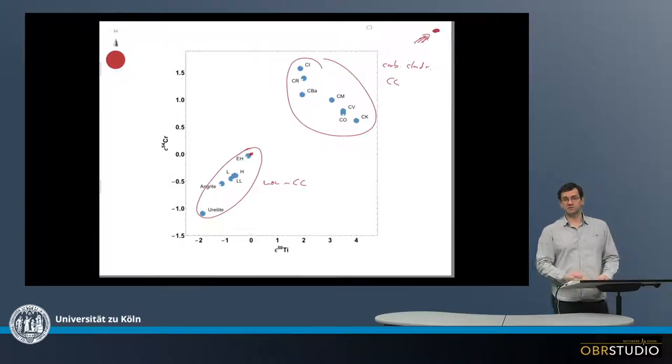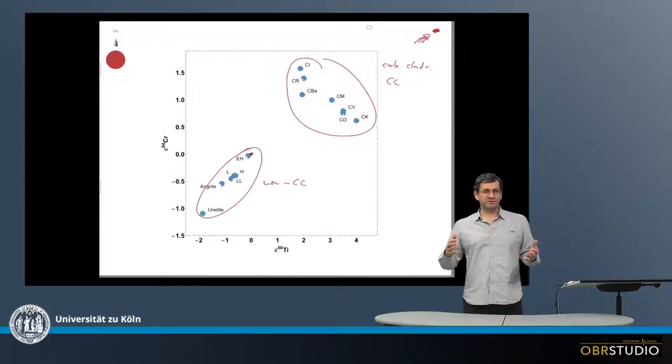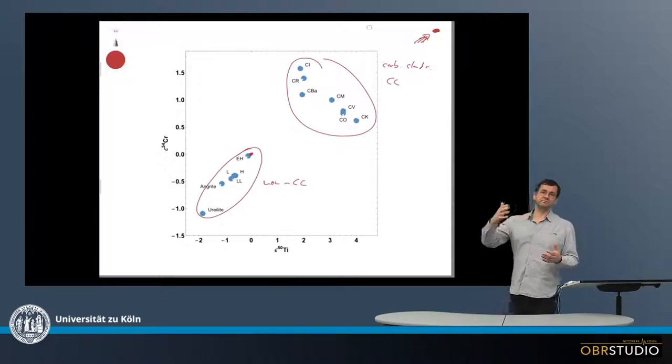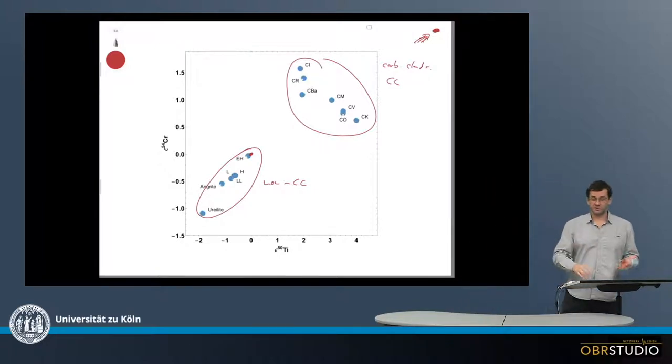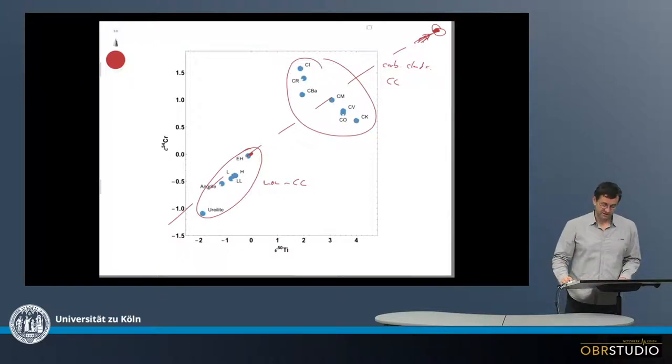And this component typically is a pre-solar grain, which can have isotopic compositions that are different by orders of magnitude from the solar composition. So it's really very high up here somewhere. And then the mixing line would go something like this. So this is the mixing line of the pre-solar component with our solar system, and all the components in our solar system fall on this mixing line depending on how much of the pre-solar component they receive.